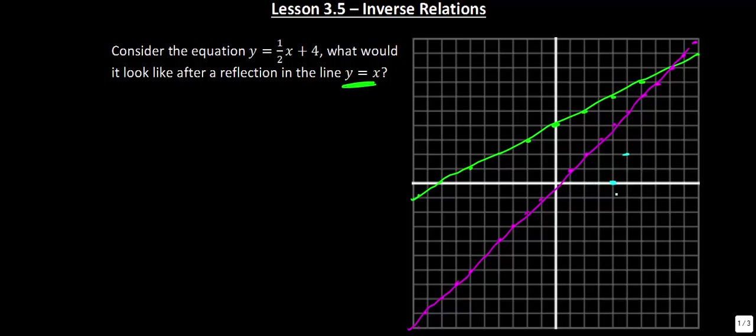In general, what you end up getting is this equation — it ends up having a y-intercept at 8 and a slope of 2.